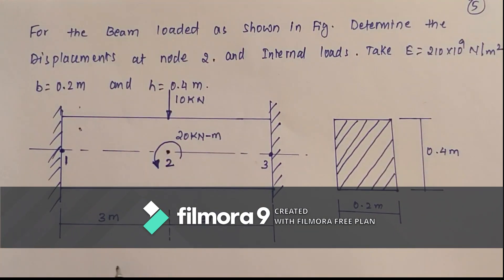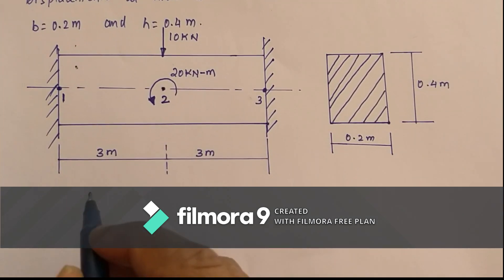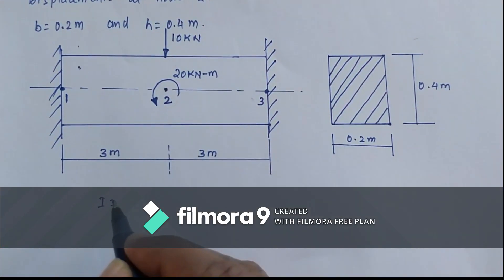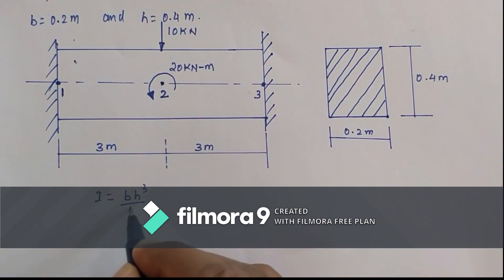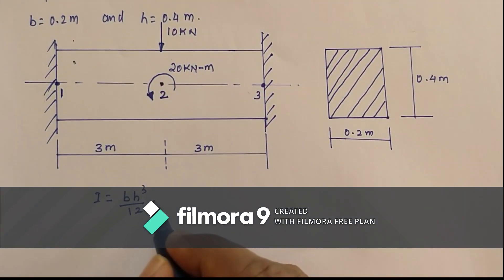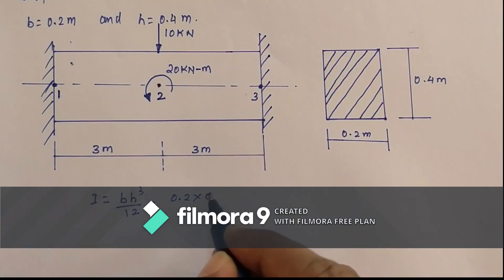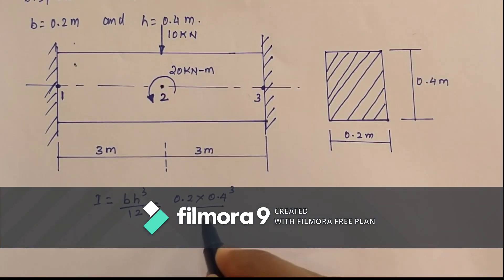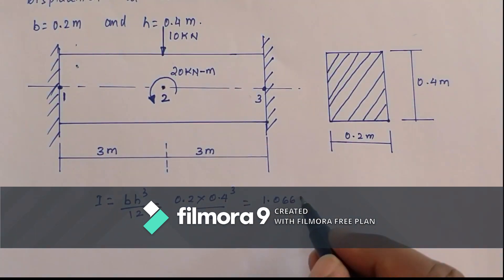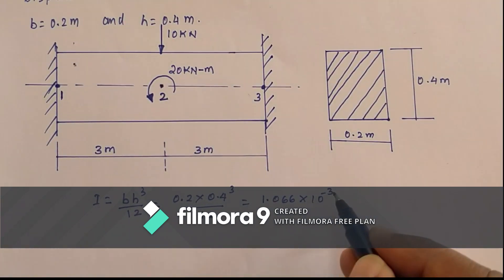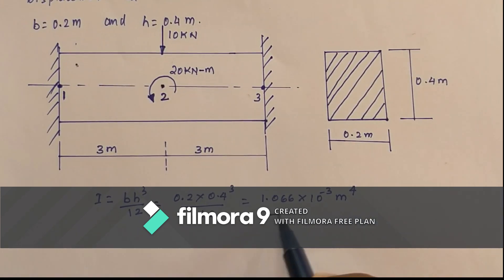Now let us find the value of I. Since it is a rectangular cross section, I equals B into H cube divided by 12. So 0.2 into 0.4 cube divided by 12, which gives 1.066 into 10 power minus 3 meter to the power of 4. This is the value of I.